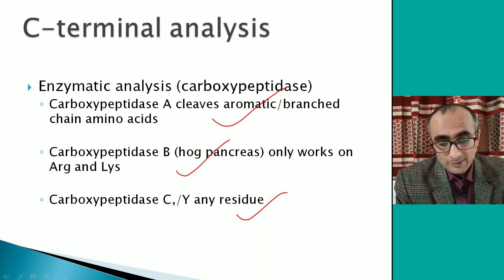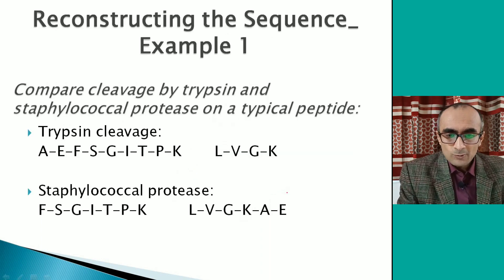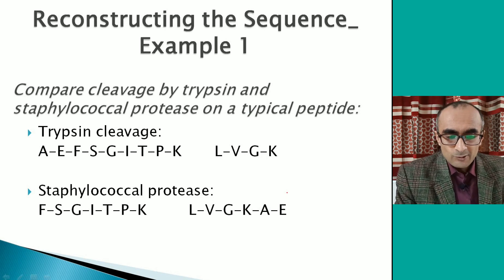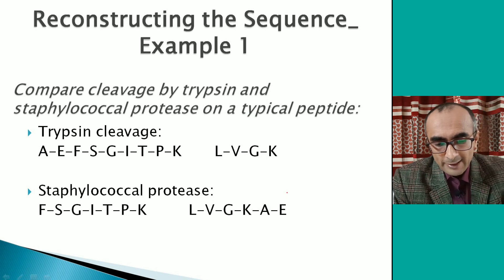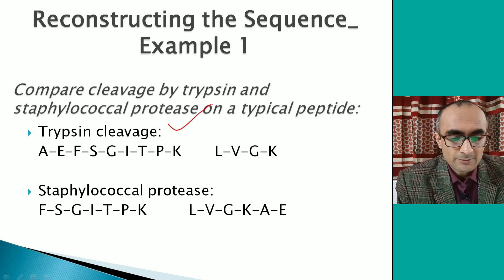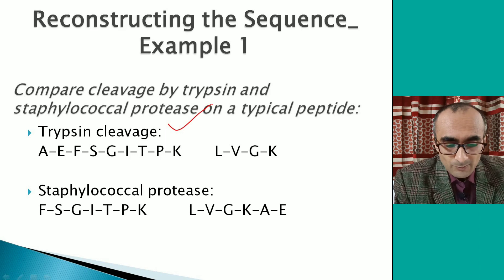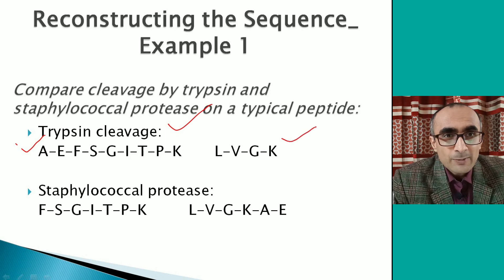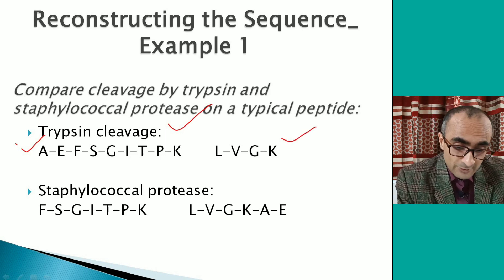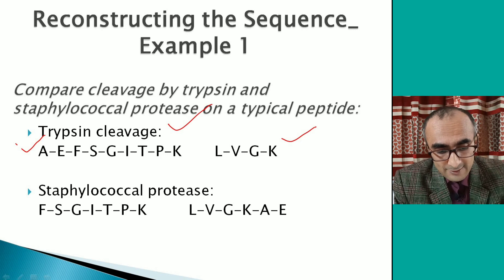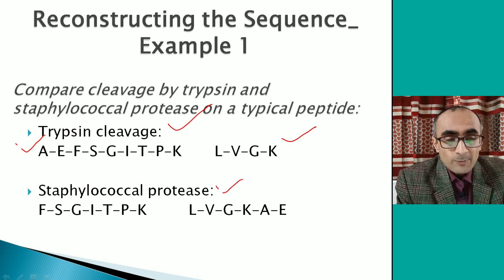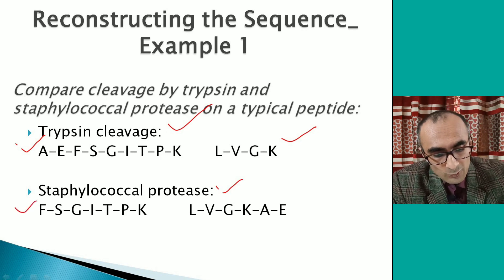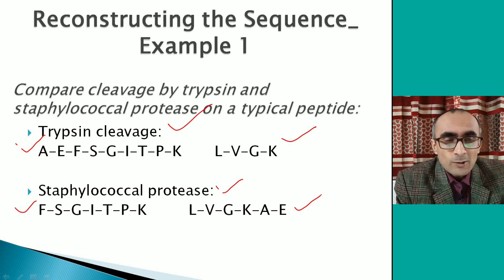Now let's look at an example of reconstructing a sequence. You have a peptide that is cleaved by trypsin — which cleaves on the C-terminal side of lysine and arginine — and you get two peptide fragments. The same peptide has been cleaved by staphylococcal protease, which cleaves on the C-terminal side of aspartic acid and glutamate, and you again get two peptides.